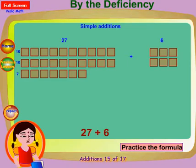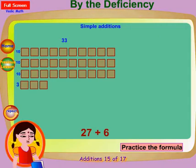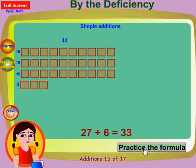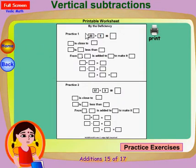6 and then add it to the 27 to make it 30. Now 6 becomes 3, add this 3 to 30 to get the answer 33. 27 plus 6 equals 33.